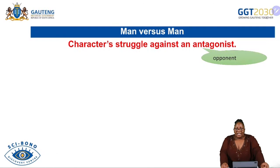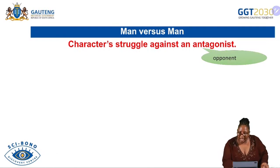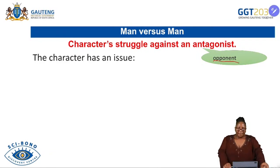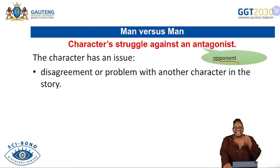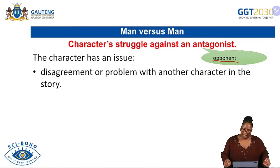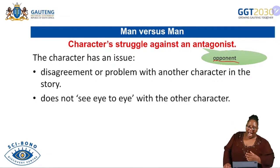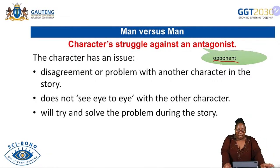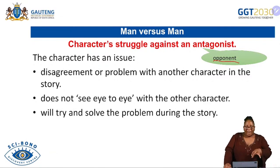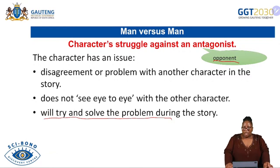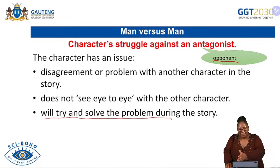Man versus man: the character struggles against an antagonist — an opponent. There is a problem or disagreement between characters; they don't see eye to eye. The story tries to solve the problem as it continues. For example, Tammy versus Mr. M is a type of conflict we're talking about.